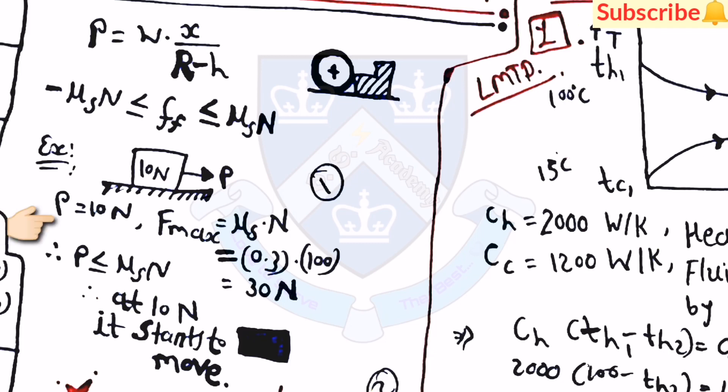Here in the starting, let's see one example which is very simple but very useful in the examination. If a block is at rest and a force is applied of 10 N, then find the friction. Here f_max is equal to mu_s into N. But here the f_max is equal to 30 N. But the condition is P should be less than or equal to mu_s into N. So here in the example the value of P which is given as 10 N is less than that of f_max.